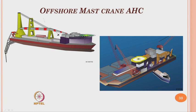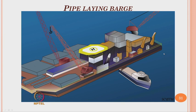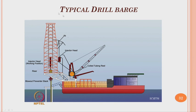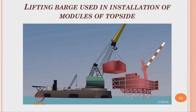A pipeline barge is a large floating vessel used for laying pipes, which transport oil from offshore to onshore locations. A typical drill barge has a drilling rig, riser, blowout preventer stack, and cable arrangements to pump out drilling muck from the drilling stack. A lifting barge is a common facility used for installation and commissioning, especially during topside installation — what we call deck mating.